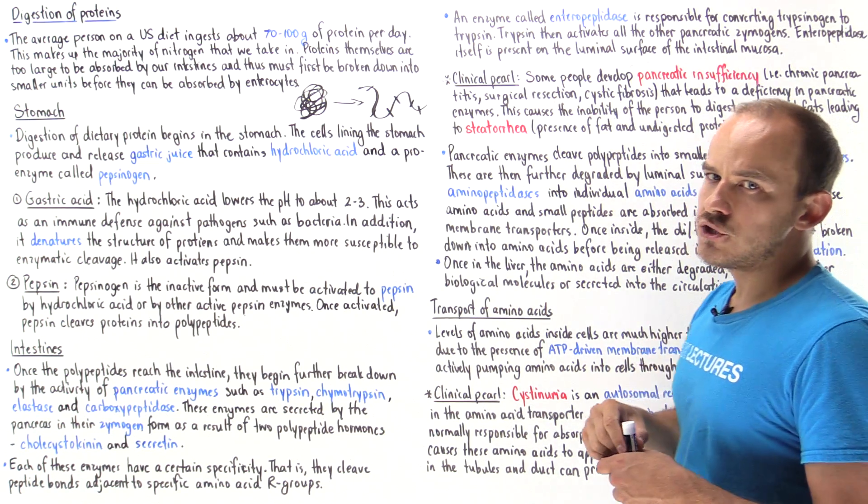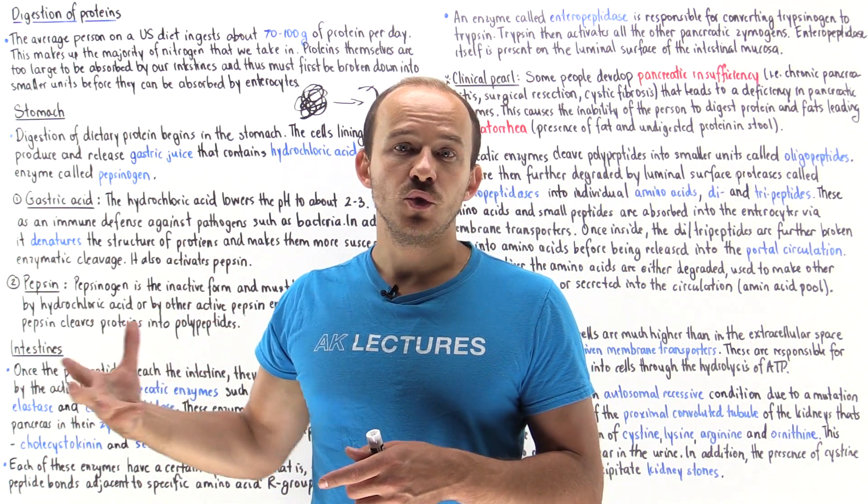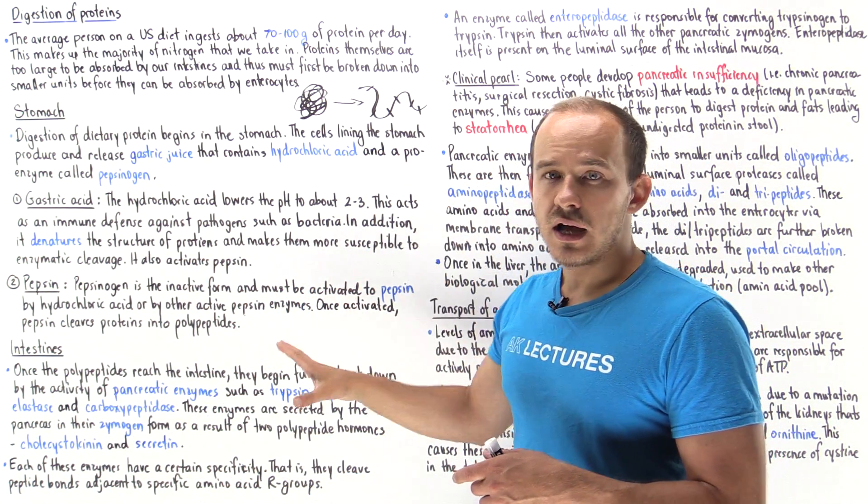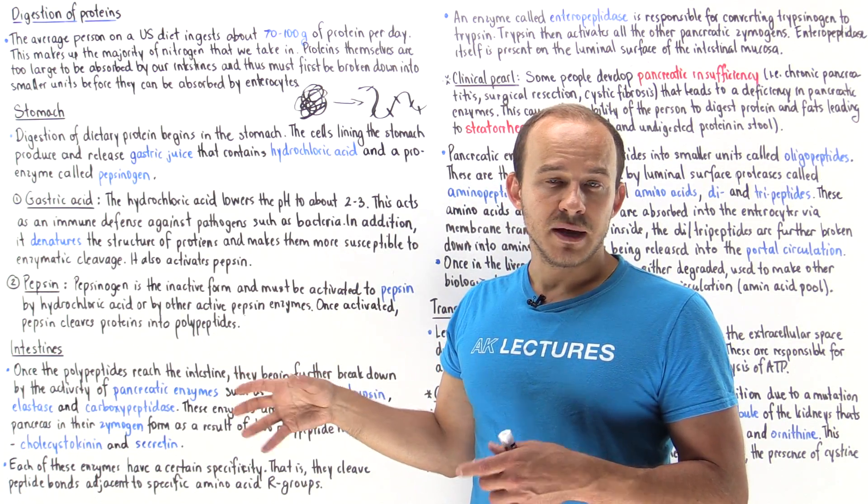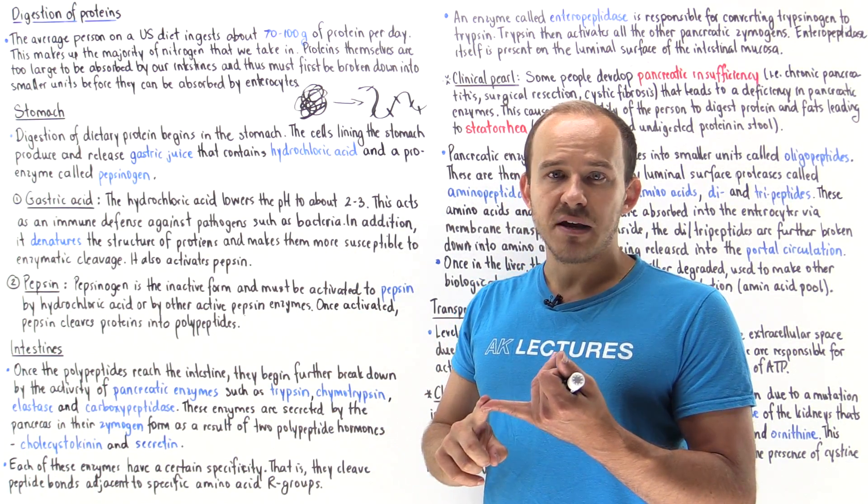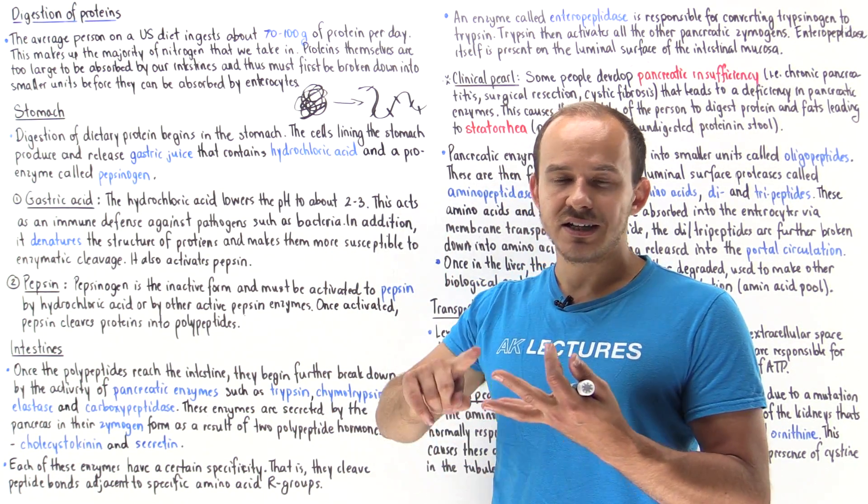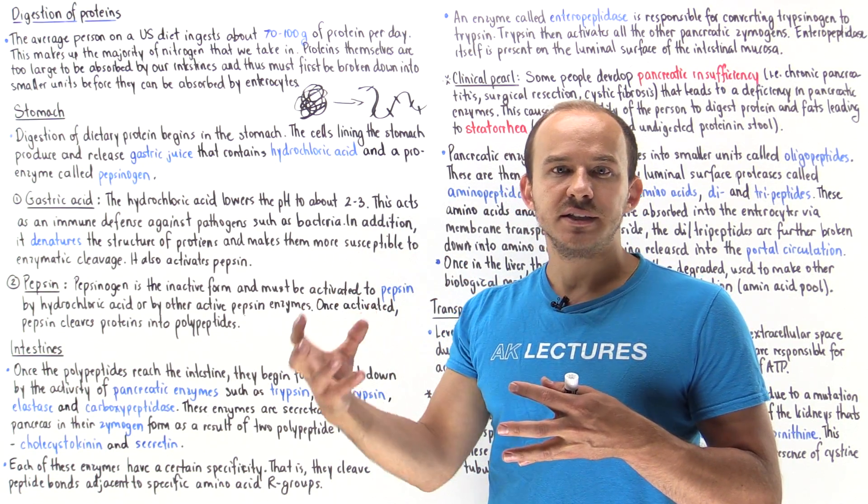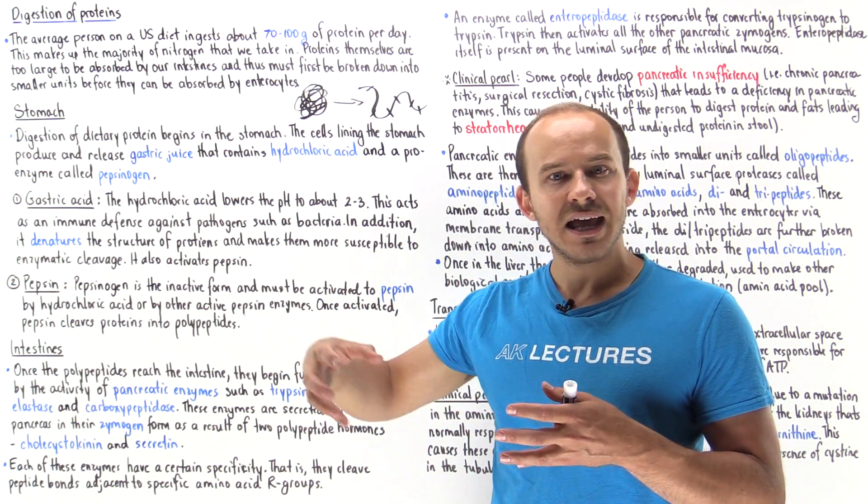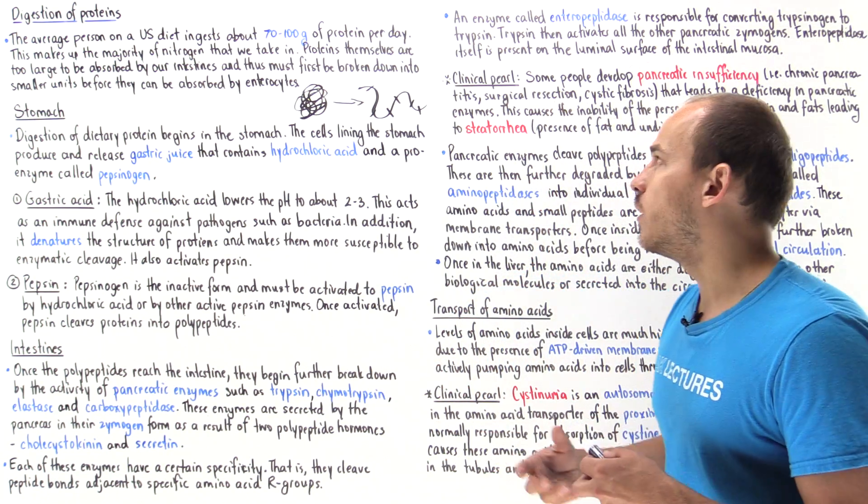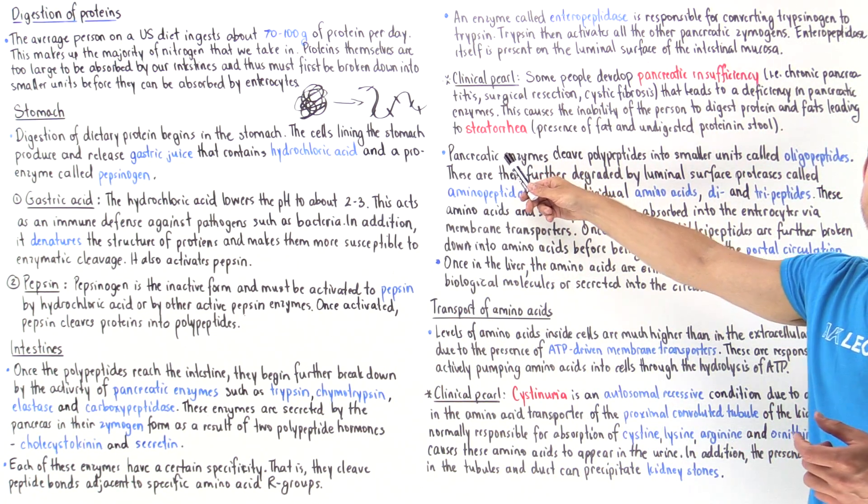Basically, pancreatic insufficiency means the pancreas isn't producing and releasing those enzymes into the duodenum. So what that means is we're not going to be able to break down the proteins and fats, and so all that undigested and unbroken down protein and fat eventually ends up in the stool. This is known as steatorrhea.